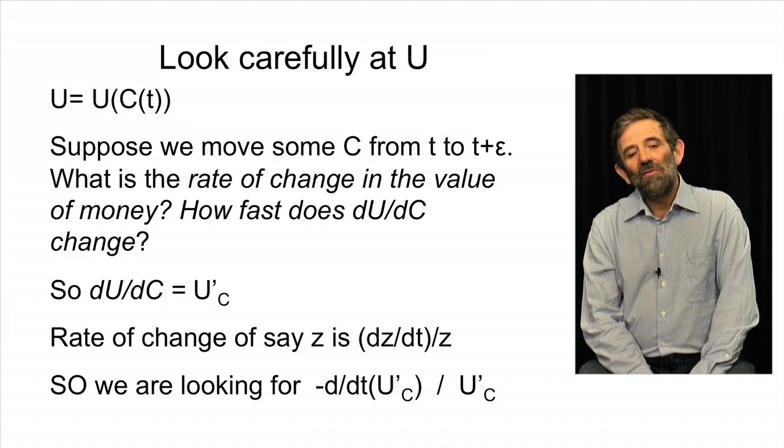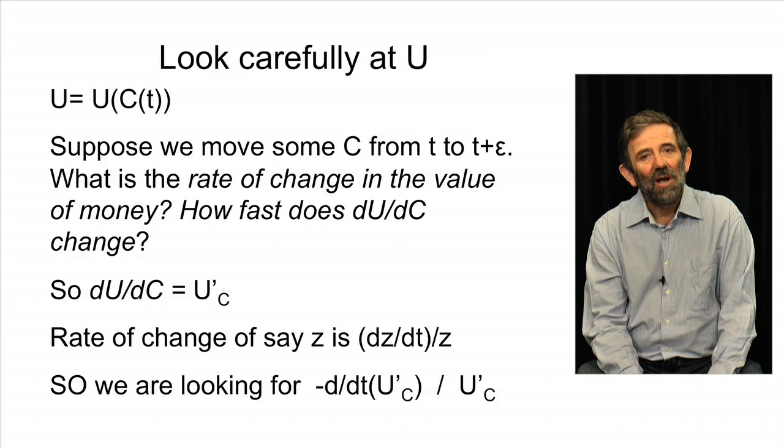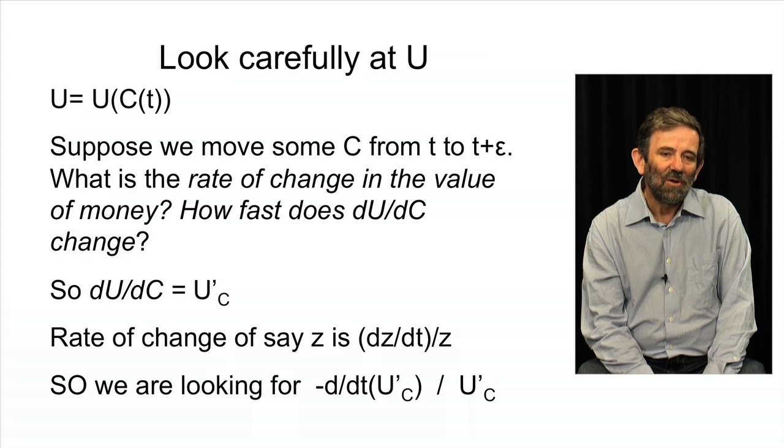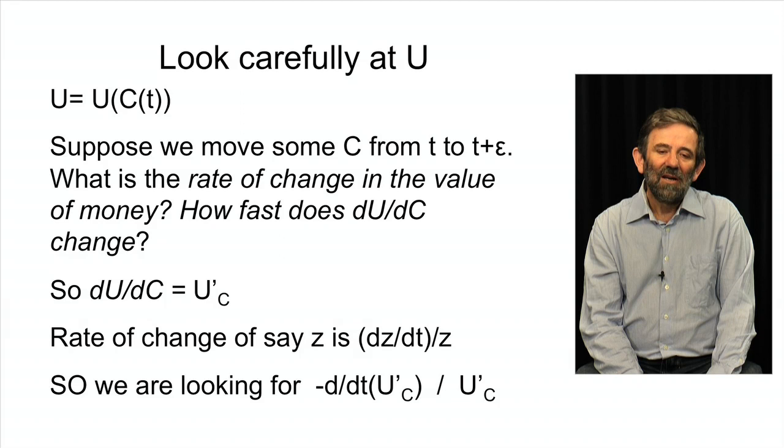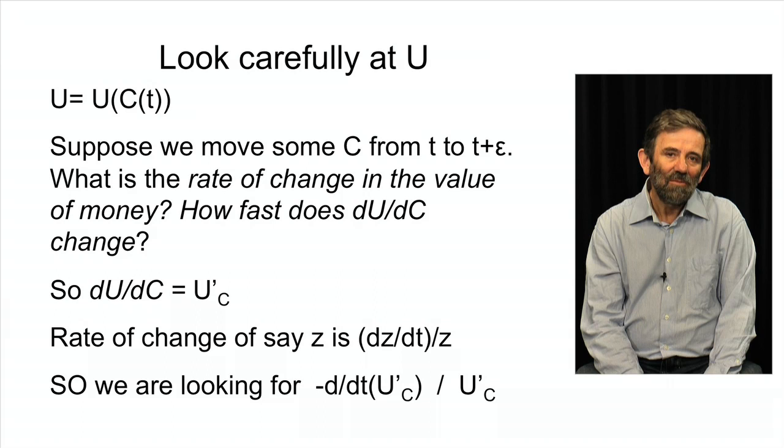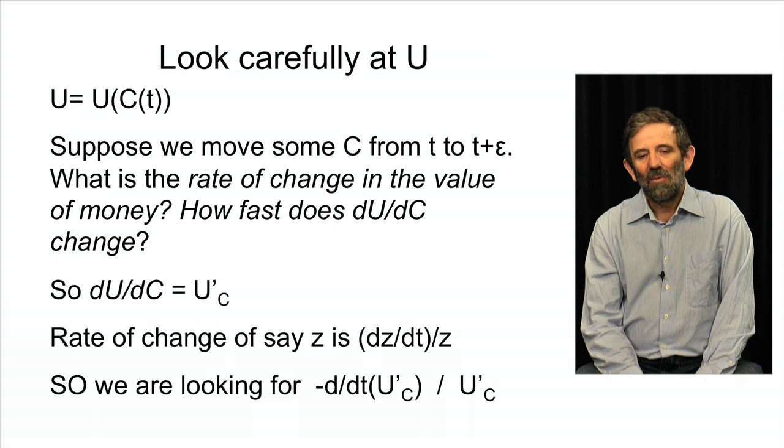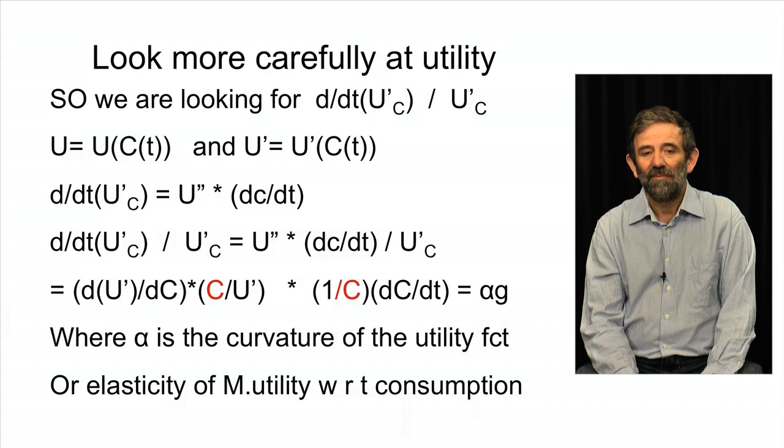And then think of just the term rate of change. Just take any variable z, what is the rate of change? Well, the rate of change is dz/dt divided by z. So, in this case, what we are looking for, the discount rate, is the time derivative of the consumption derivative of utility, that is the time derivative of the marginal utility of consumption divided by the marginal utility of consumption. Once you've figured out what it is you're looking for, it's not that hard to take the derivatives.